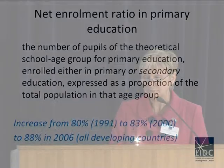The indicators that the UN claims to use to measure progress are threefold. The first is the net enrollment ratio in primary education. The second is the proportion of pupils starting grade one who reach, rather than complete, the last grade of primary. And the third is the literacy rate of 15 to 24-year-olds, women and men. The headline news is that the net enrollment ratio in primary education has increased from 80% in 1991 to 83% in 2000 to 88% in 2006. That's the figure for all developing countries.